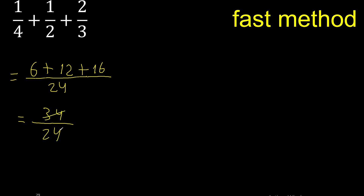Can be simplified because it can be divided by the same number. Divided by 2: 34 divided by 2 is 17, 24 divided by 2 is 12. Finish.